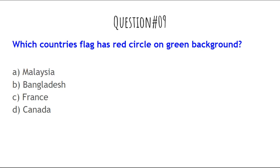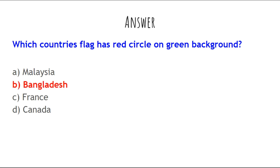The next question is: Which country's flag has a red circle on a green background? The options include Bangladesh, France, and Canada. The answer is Bangladesh — the background of Bangladesh's flag is green with a red circle in the middle.